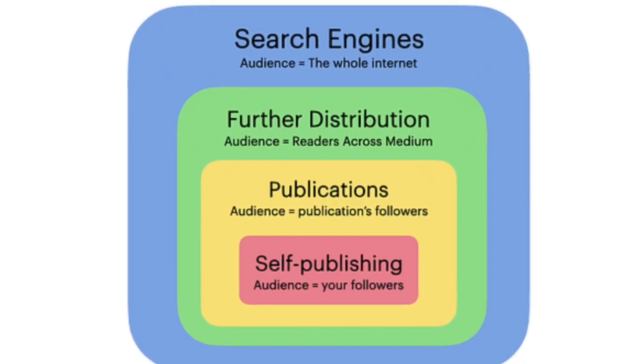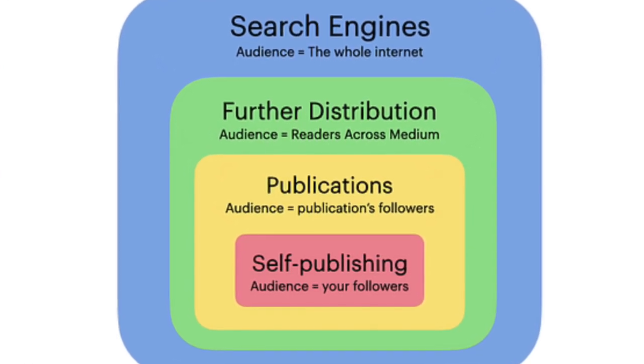Now let's move on to the audience types of Medium. Basically there are four types of audiences you can reach, starting from the smallest to the biggest. The smallest audience is the self-publishing audience. Once you hit publish on Medium for the first time, you're publishing to your followers only. The more followers you have the more eyeballs you attract. If you're just getting started you probably have zero followers. You can also use tags when self-publishing so your posts appear on topic pages related to those tags.